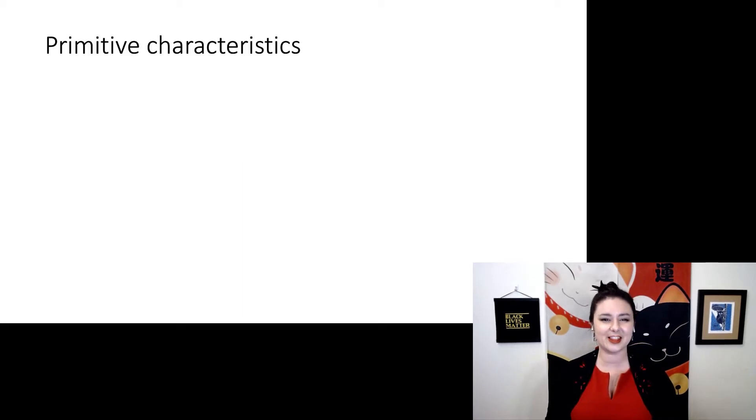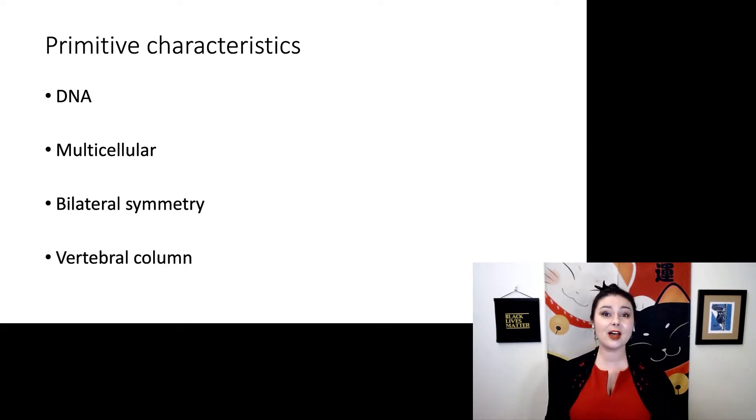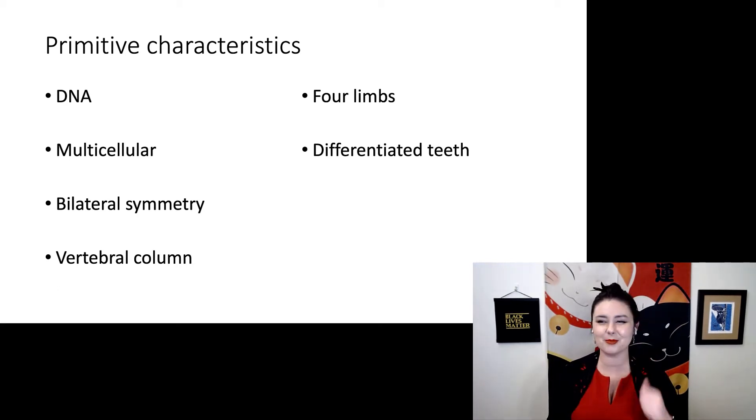So first, let's take a look at these primitive characteristics. Here, we're talking about really old stuff like DNA. Every other living creature has DNA. We are also multicellular, which we share with many different living domains. We also have bilateral symmetry. We have two halves that are mirrored. We also have a vertebral column. We have four limbs, just like most land animals. We have differentiated teeth or different types of teeth. We have incisors, canines, premolars, and then molars all the way in the back. We also have internal pregnancy and fur, all of which we share with all other mammals.